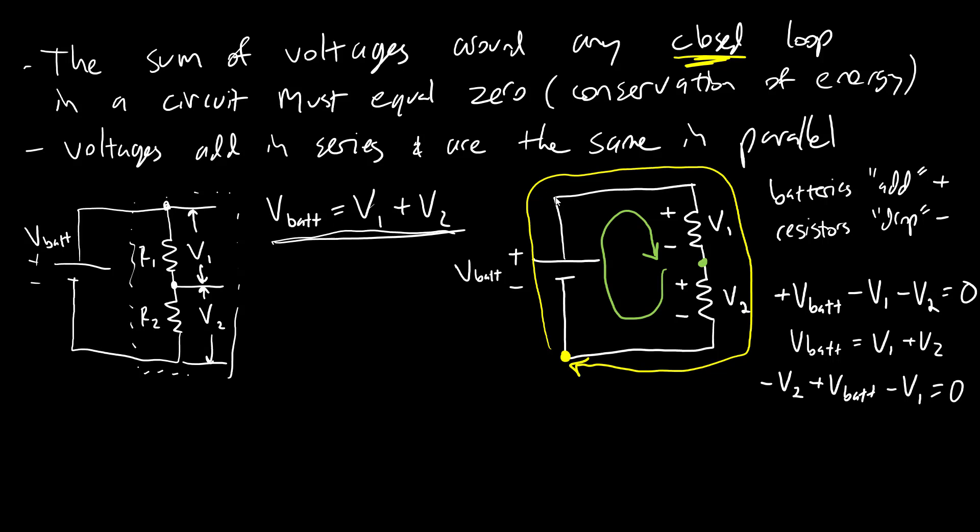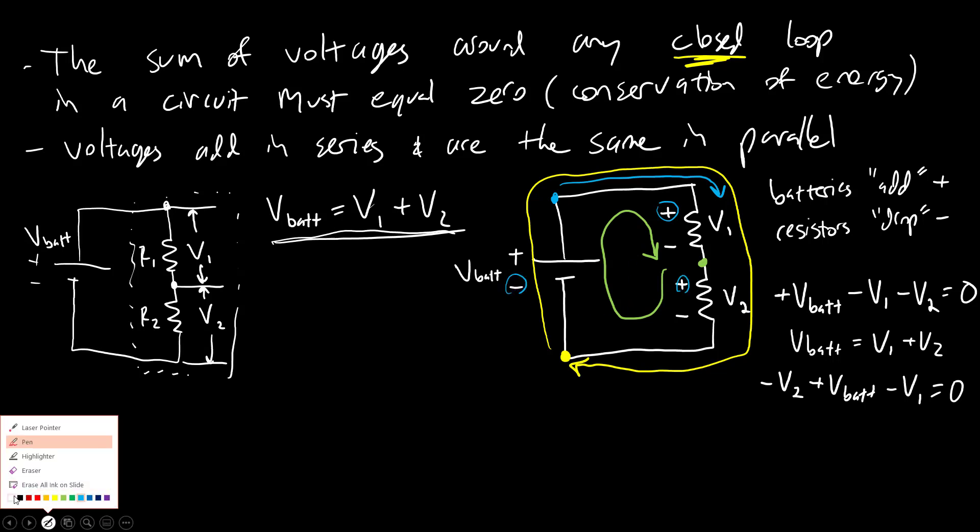Now, another way I have seen this done, again, depending on the textbook or convention of the lecturer, is to typically start at the positive terminal of the battery and go around the loop in the same direction I have the yellow here, but add or subtract based on the sign that you encounter first. So rather than dropping or subtracting the resistors, in this case, I'm going to add because I encounter that plus sign first. So I'll add this one, add this one, and then actually subtract the battery voltage when I get over there. So if I do that, start here, go around.